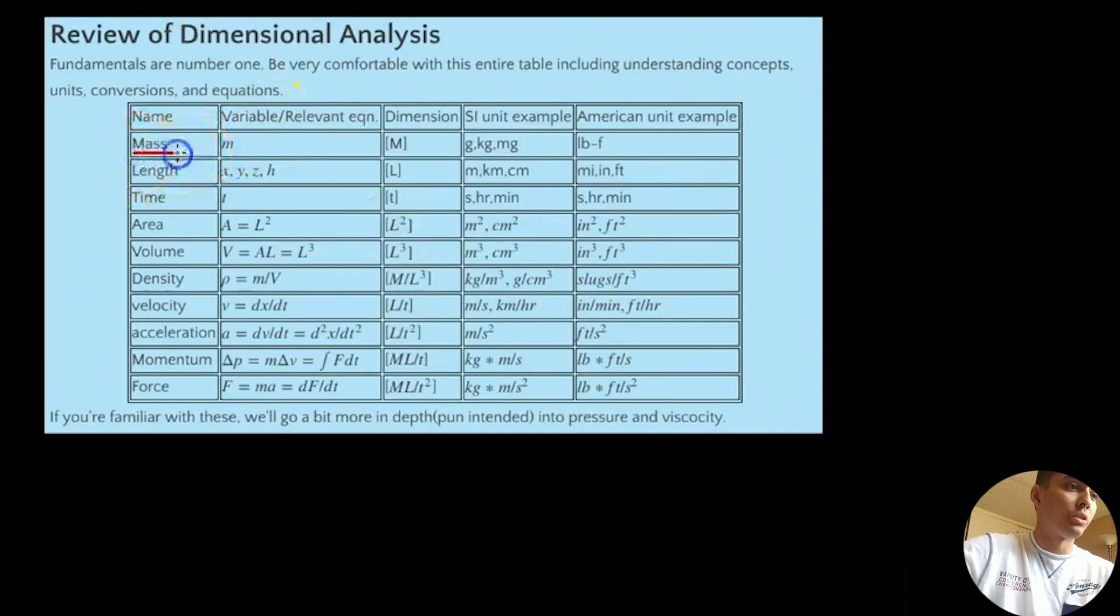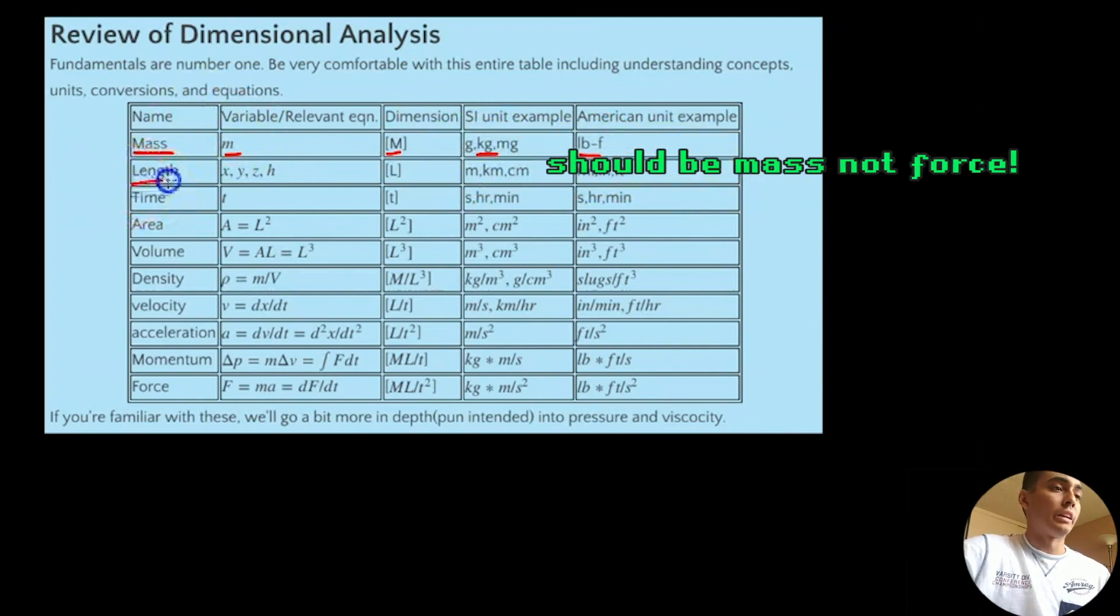We've already gone over mass, which of course is the amount of matter in an object. It's based on the number of atoms and its dimensions are in mass capital M. And its variable is in lowercase m, careful not to mix that up. And of course a typical example would be in kilograms in SI or pounds force in American units.